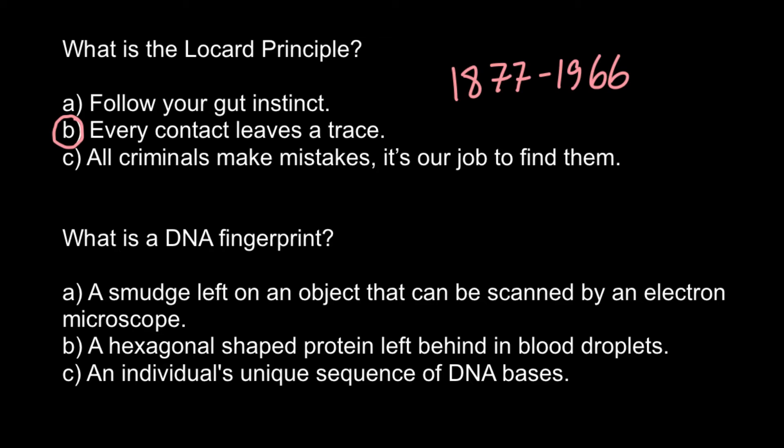The next question is: what is a DNA fingerprint? Answer A — residue left on an object that can be scanned by electron microscope; answer B — a hexagonal shaped protein left behind in blood droplets; and answer C — an individual's unique sequence of DNA bases. The correct answer is answer C.